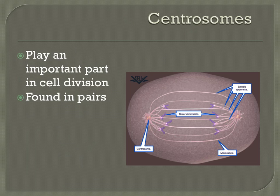Centrosomes are organelles that play an important role in cell division — the process by which one cell becomes two. The picture on the right shows centrosomes pulling materials towards different sides of the cell by stringy structures called microtubules. There are usually pairs of centrosomes present so that materials can be pulled to two different sides in equal quantities, resulting in two new cells each with everything needed for survival. The type of centrosome found in animal cells is called a centriole. Centrosomes will be discussed in more detail in a later unit on cell reproduction.